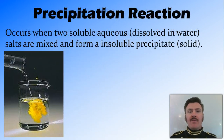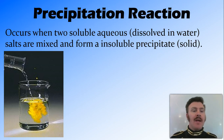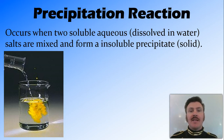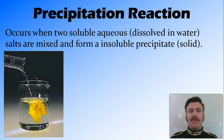Now, a precipitation reaction occurs when two soluble aqueous salts — and aqueous just means dissolved in water — are mixed to form an insoluble precipitate, which is a solid. So two soluble things mix, they react, and they form something that is not soluble. That precipitates out as a solid, and we call that the precipitate.